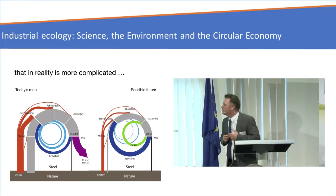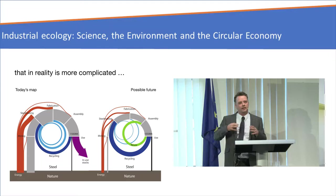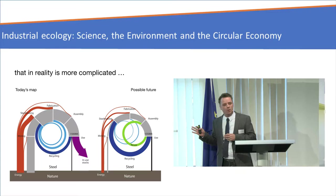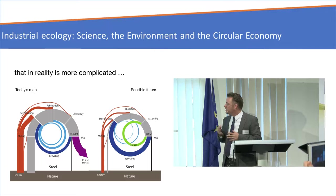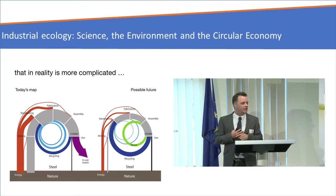Here's some work we've been doing on the steel industry. We're trying to draw a map of what current circularity for global steel looks like — both today and what we think we might be able to get to in the future as a technical limit. A few things to notice: firstly, in orange, we have energy.